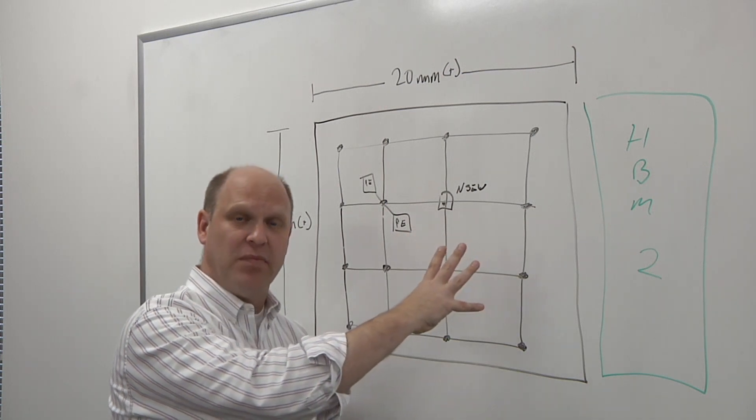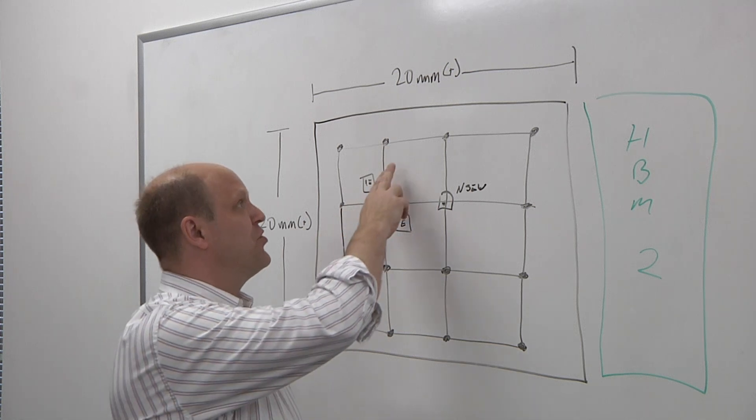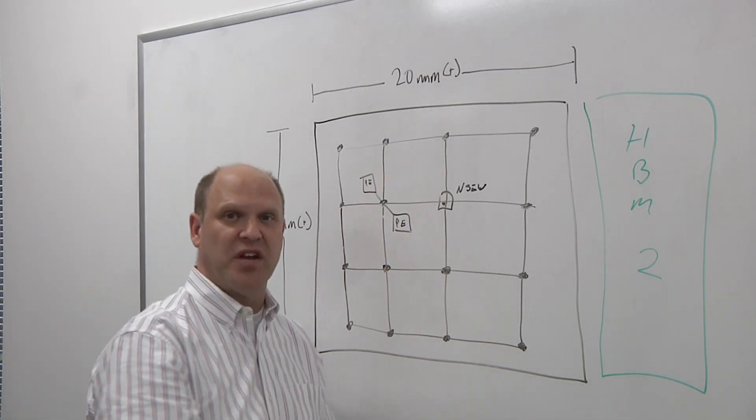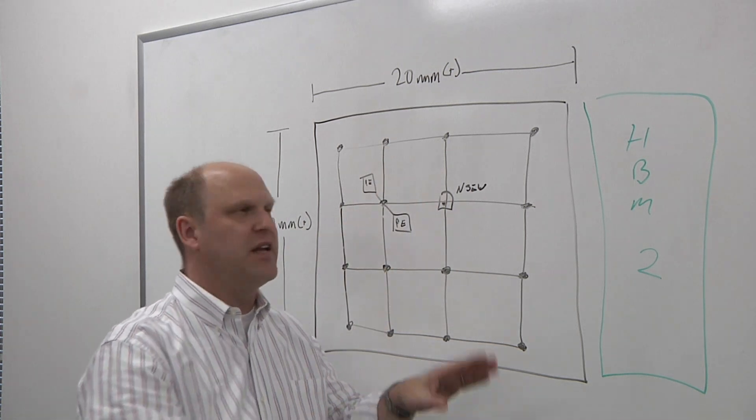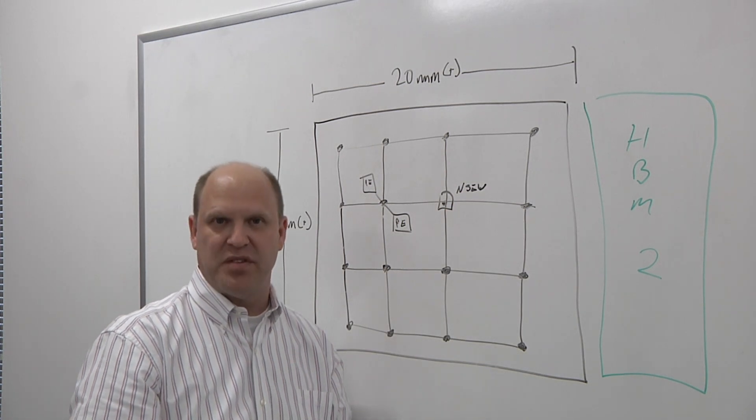And you're dealing with skew and things like that. One of the things that people use to deal with this is having source synchronous connections so that the clock is traveling with the data through the chip. And so that makes things easier for the place and route guys on the back end.